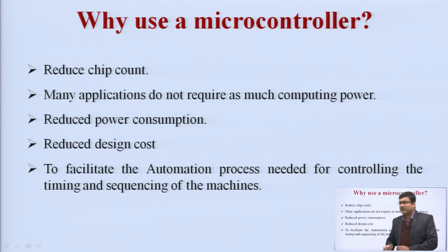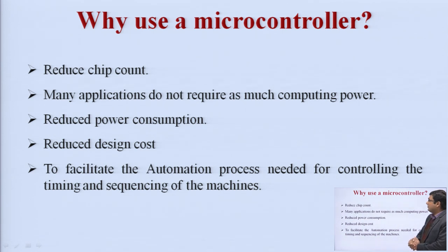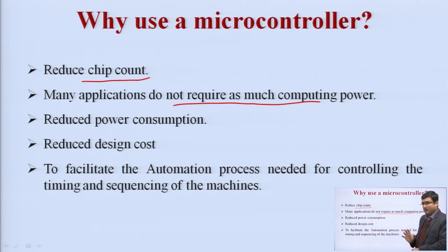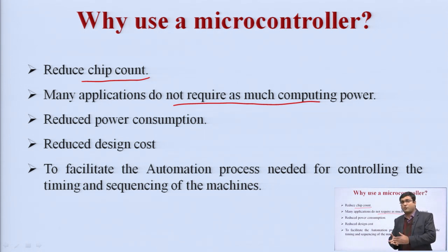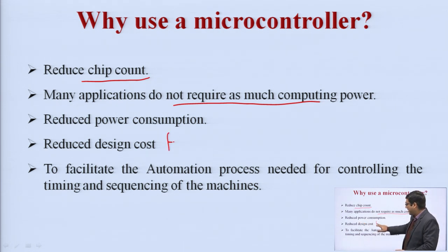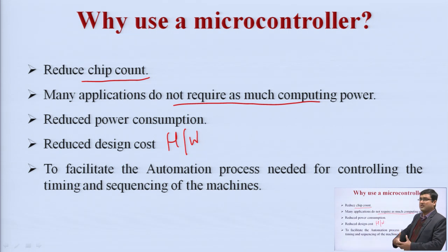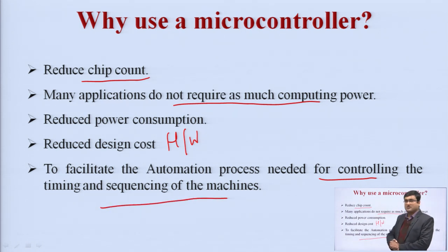Now, why do we use a microcontroller? This is a question most students ask. We use a microcontroller to reduce chip count — all components are embedded into a single chip, so our chip count is less. Many applications do not require as much computing power, so for those applications we prefer microcontrollers. It has reduced power consumption because all components are embedded on a single chip. It also reduces design cost, which is directly proportional to hardware requirements. It facilitates the automation process — controlling the timing and sequencing of machines.